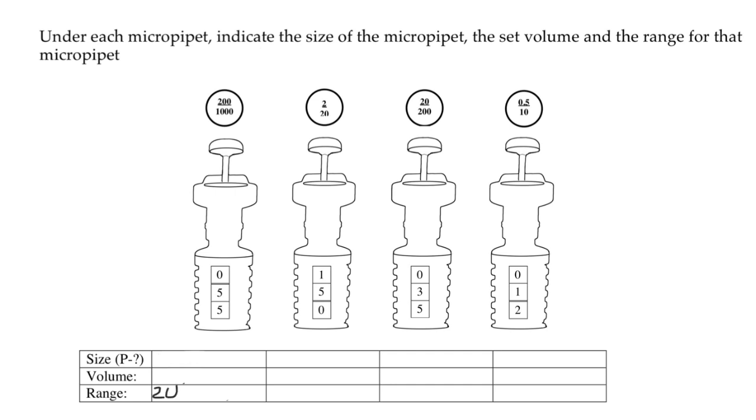Between 200 and 1000 is the range of this micropipette. All these micropipettes measure in microliters. The biggest volume that this micropipette can measure is 1000 microliters, hence the name P1000.